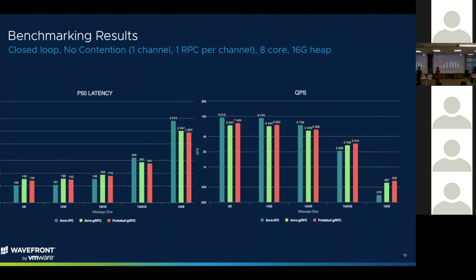One thing we're still looking into is that right now the application has to propagate the tracing context manually. If you're making a gRPC call from within a gRPC call, propagating context automatically is something we're investigating. Also — the gRPC monitoring dashboards I showed are something we're looking for beta testers on. We'll be shipping those pre-canned dashboards so as long as you use gRPC on Java, you'll automatically ship those metrics and be able to explore them in Wavefront.